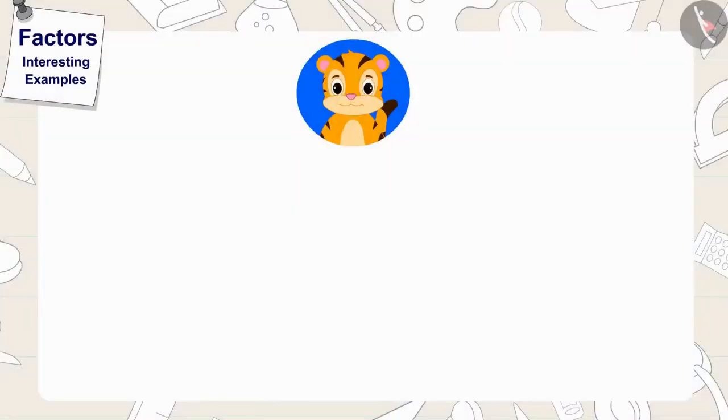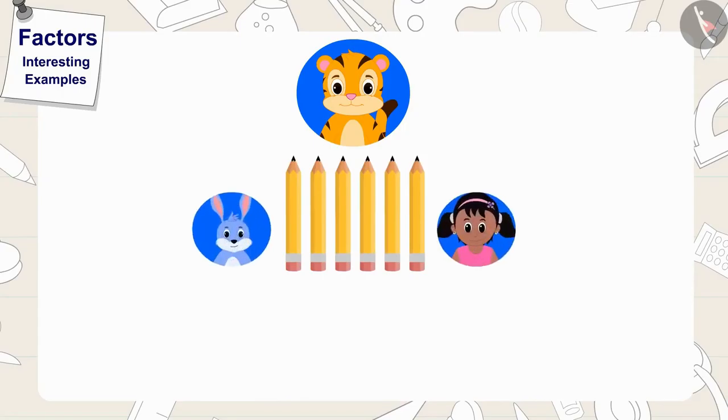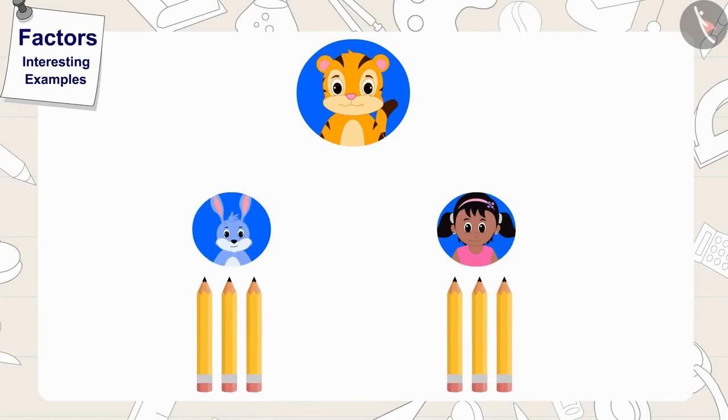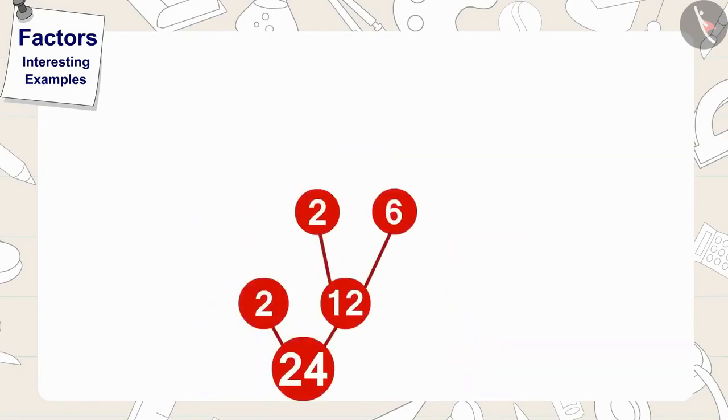Yes, those friends can distribute their 6 pencils equally to 2 friends by giving them 3 pencils each. How did we find this answer? That's correct. Finding the factors of 6. Golu once again made 2 lines and circles in this way and wrote the numbers 2 and 3 in it.